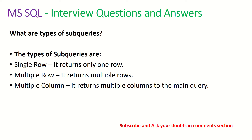What are the types of subqueries? The types of subqueries are single row, multiple row, and multiple column. A single row subquery will always return a single row. A multiple row subquery returns multiple rows. A multiple column subquery returns multiple columns to the main query.